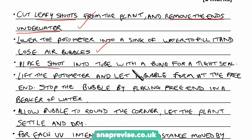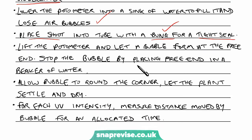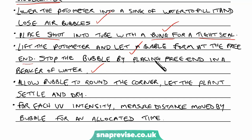Then place the shoot into the tube with a bung for a tight seal, so that water can flow freely from wherever our bubble is into the plant. Lift the potometer out of the sink with the plant and let the air bubble form at the free end — without the air bubble we can't measure anything. Then stop the bubble by placing the free end in a beaker of water, so that we don't get continuous bubbles forming or water leaking out.